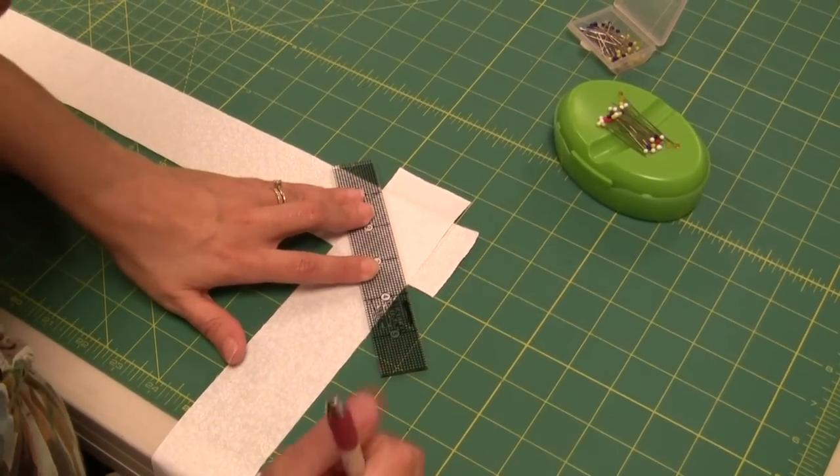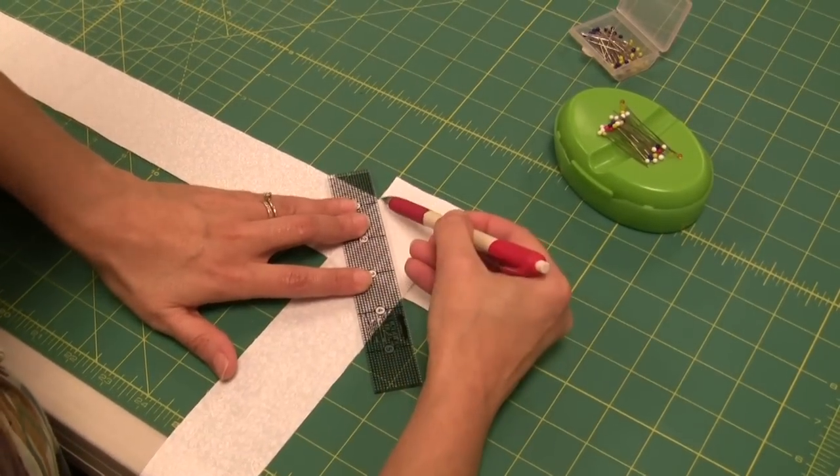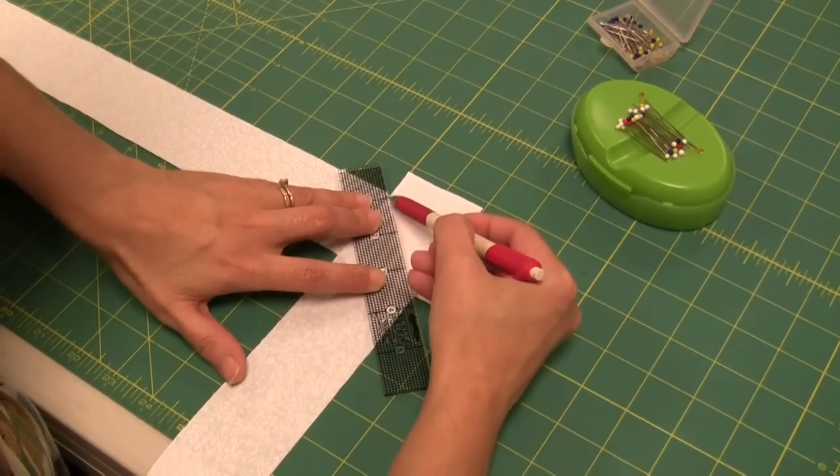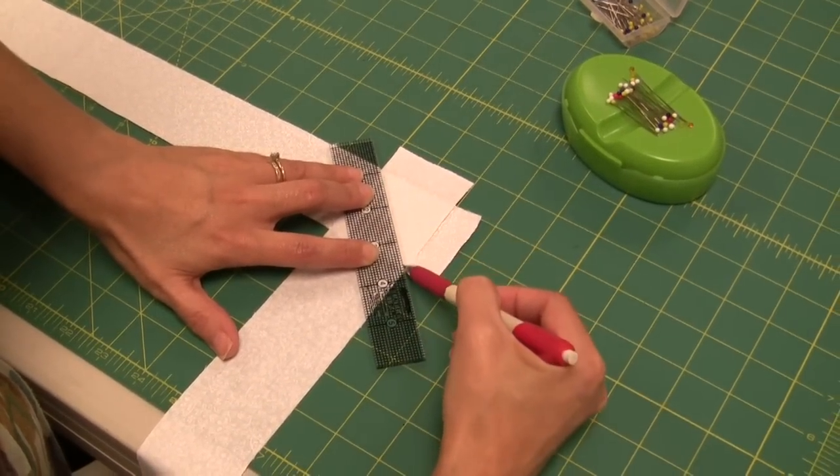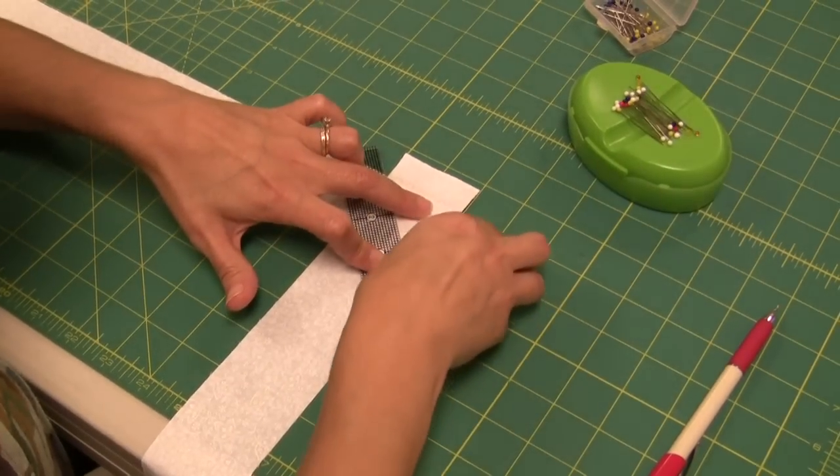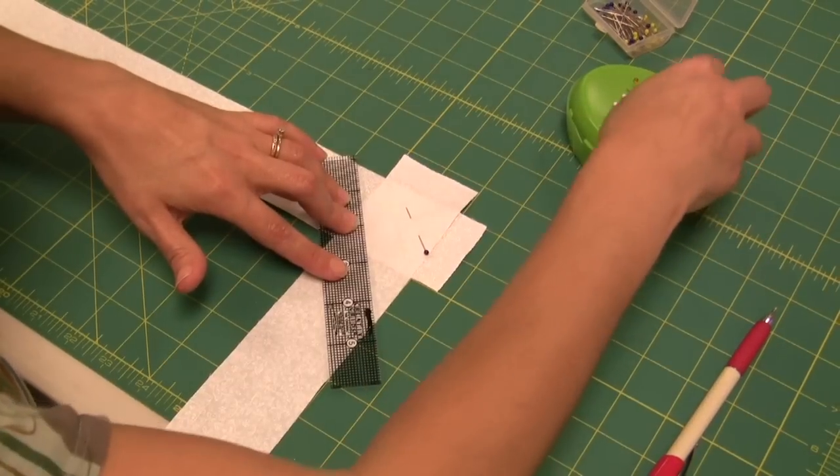Once you have one horizontal and one vertical, draw a diagonal line from the top left corner to the bottom right corner. Then add two pins, one on each side of the line, just to keep your strips together.